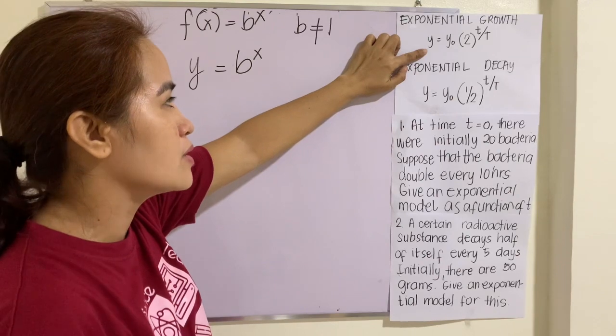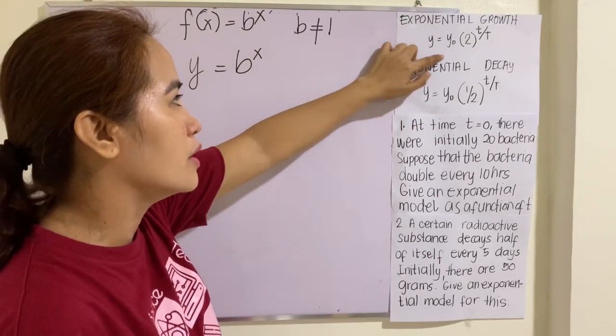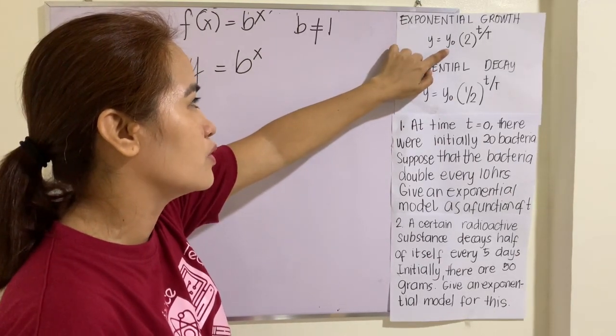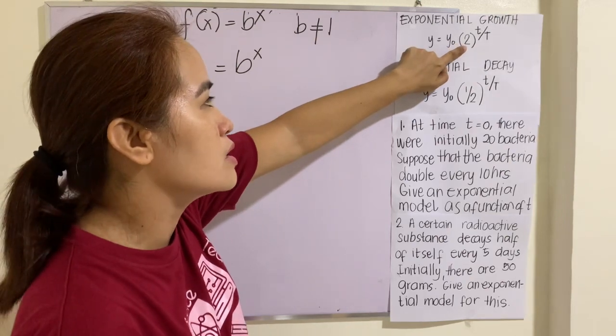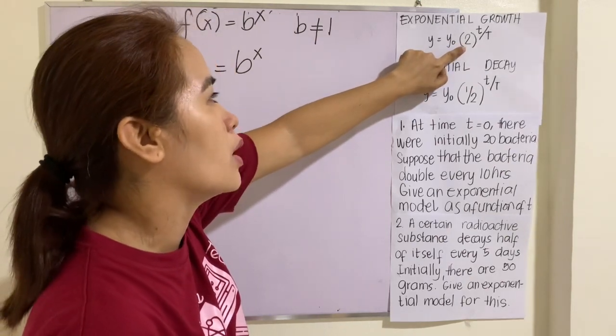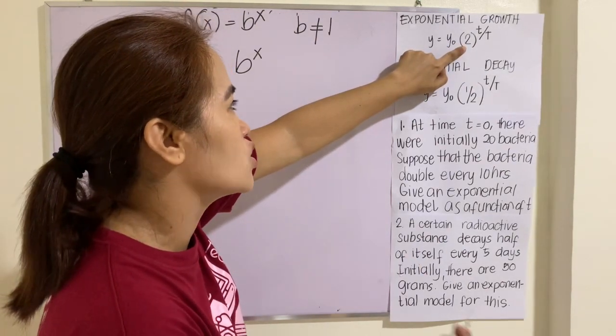This y is the final number of bacteria. This y sub 0 is the initial number of bacteria. This 2 means double. It depends upon the problem. If it is triple and so on and so forth.